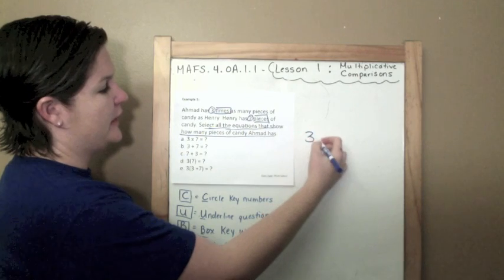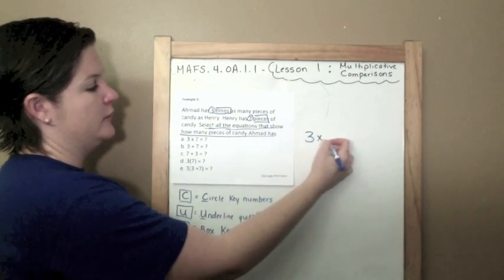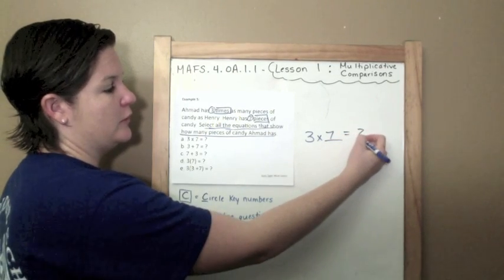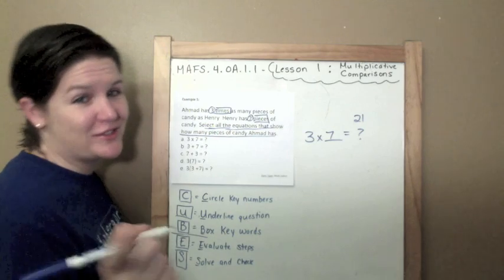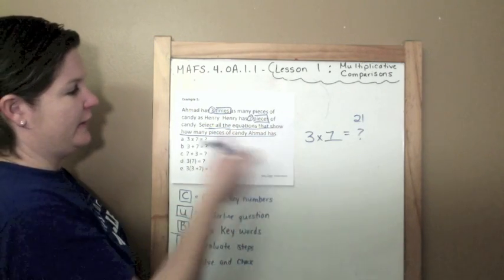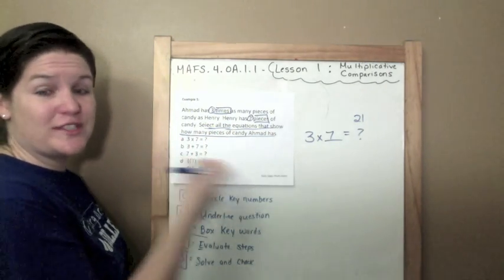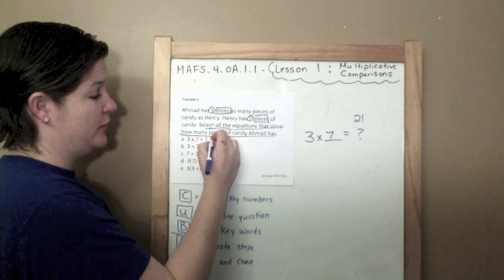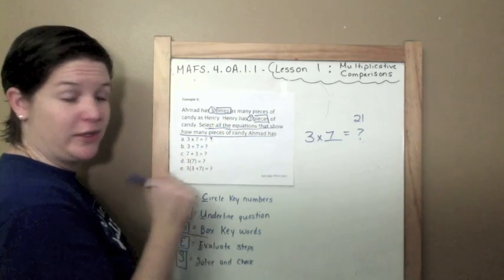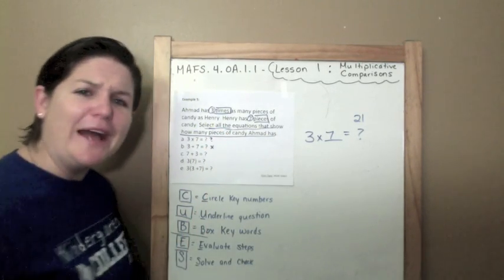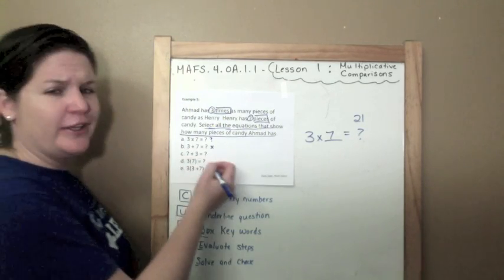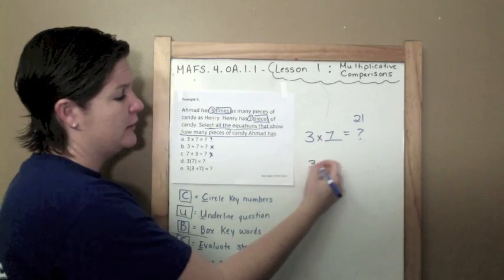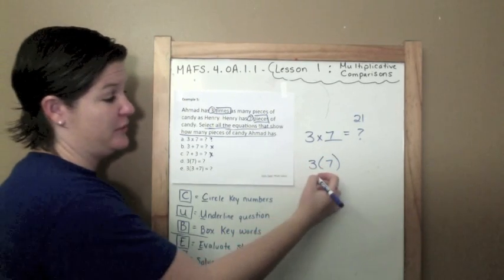So Ahmaud has three times as much as Henry, and Henry has seven pieces. So that would equal what? We know it's 21 because, again, you're fluent with your math facts. And so now I just need to select all the equations that might look like this: three times seven equals the unknown. Yeah, that looks like one. Three plus seven. I am not doing addition here. Seven plus three. Again, no, not doing addition. Three times seven. This really is three times seven.